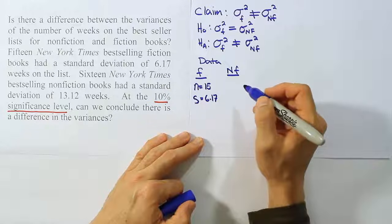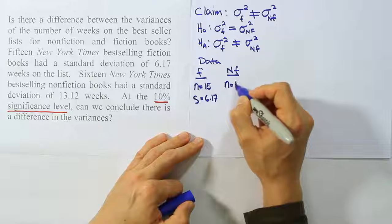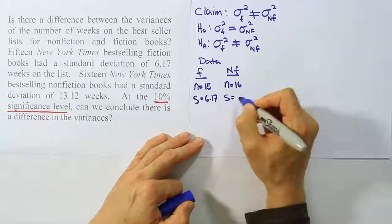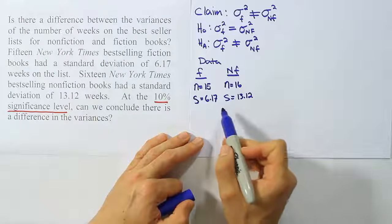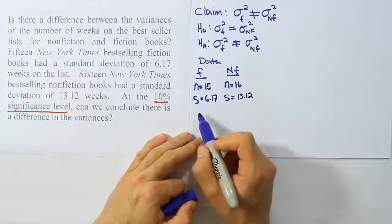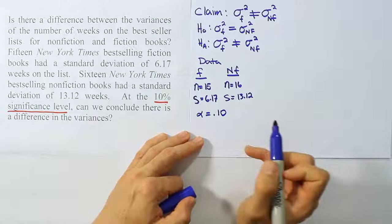It says 16 New York Times best-selling books are looked at for the non-fiction section. So n is equal to 16. And it says the standard deviation for those books is 13.12. So it clearly looks like there's a difference. The standard deviation is twice the size of that one. And we're given that there's an alpha of 10%, 0.10.